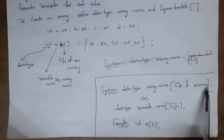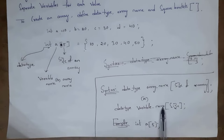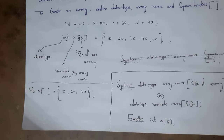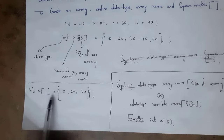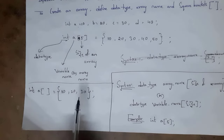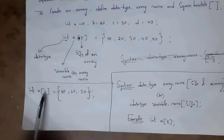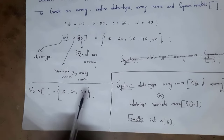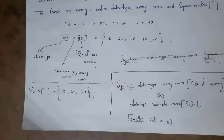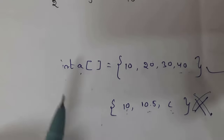An array contains: data type, array name, and size in square brackets. It is not mandatory to include the size. You can write: int a[] = {10, 20, 30}. Whenever you do not include the size, the array will automatically count the values — here there are three values — so it will automatically take size as 3.